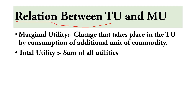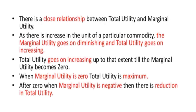Relationship between total utility and marginal utility: Marginal utility means the change that takes place in total utility by consumption of an additional unit of the commodity. Total utility means the sum of all utilities from the consumption of different units of the good — it is calculated as the sum of marginal utilities obtained from the consumption of different units of the commodity. There is a close relationship between total utility and marginal utility.